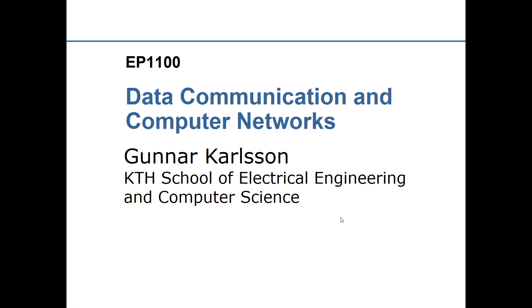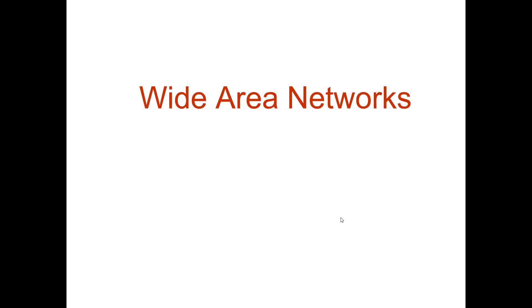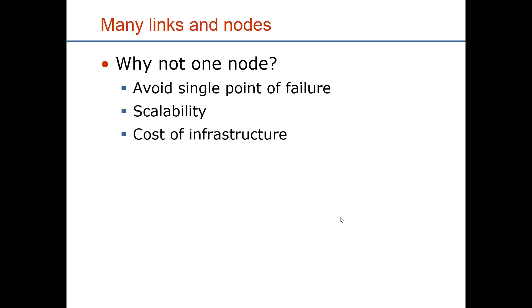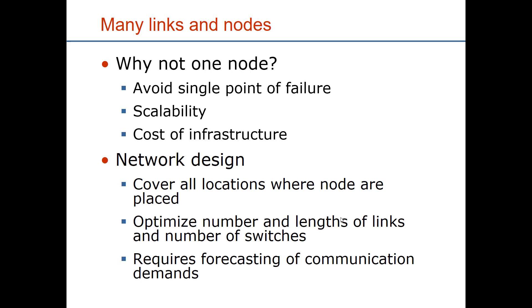EP 1100, data communication and computer networks. We now move from local area networks to wide area networks — networks with many links and nodes. A single node is a bad idea: if it fails the whole network is gone, scalability suffers, and you need a lot of cables which is costly. Instead, you face a network design problem: optimizing the number of links and switches to cover all locations, which requires ongoing forecasting of communication demands as networks are never finally built but continuously upgraded and expanded.